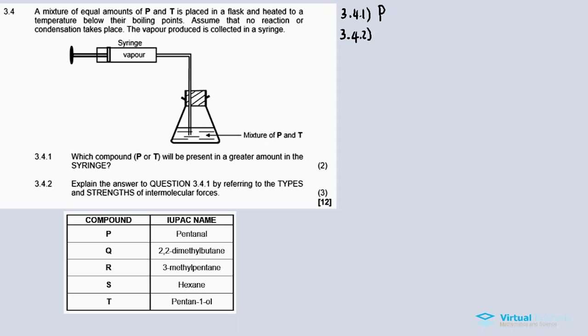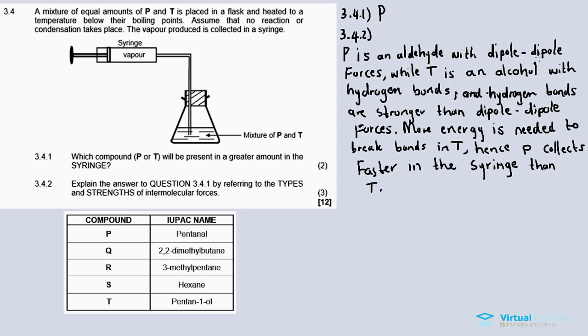3.4.2: Explain the answer to 3.4.1 by referring to the types and strengths of intermolecular forces. P is an aldehyde with dipole-dipole forces, while T is an alcohol with hydrogen bonds. The hydrogen bonds are stronger than the dipole-dipole forces, so more energy is required or needed to break the bonds in T. Hence, P collects faster in the syringe than T because P evaporates much faster than T. So 3.4.2 is the last question for question three.